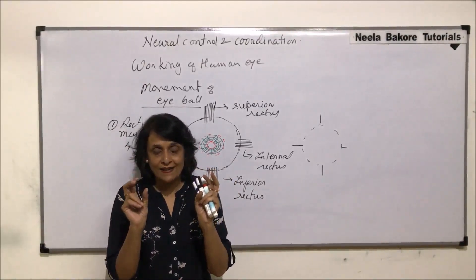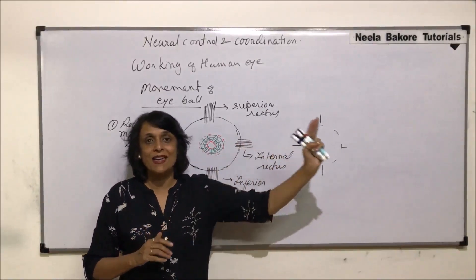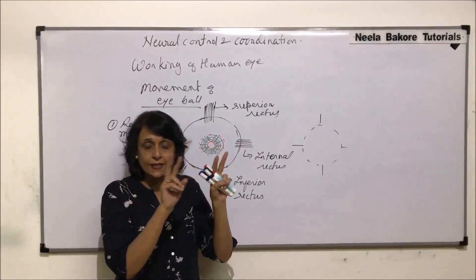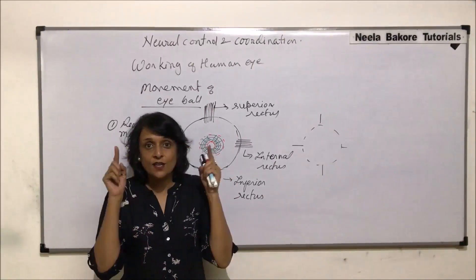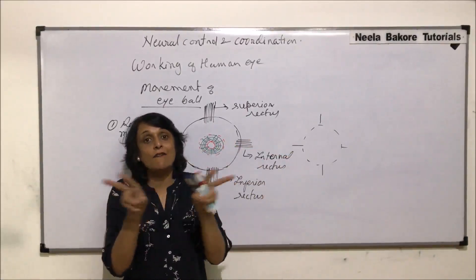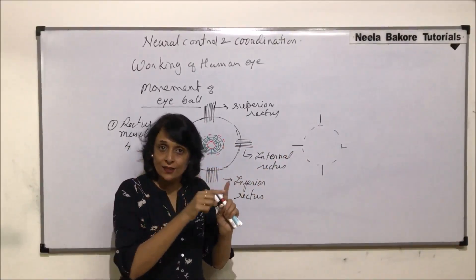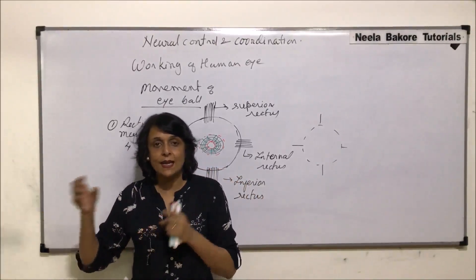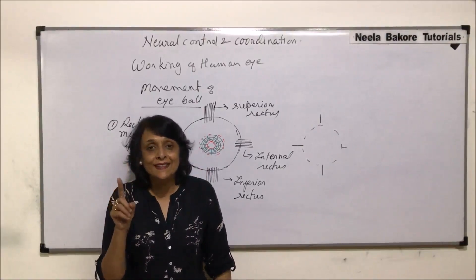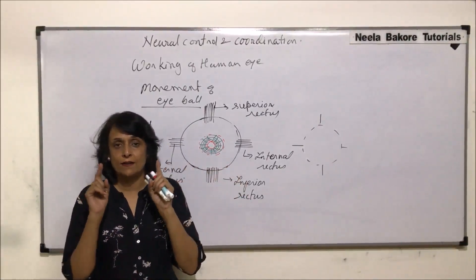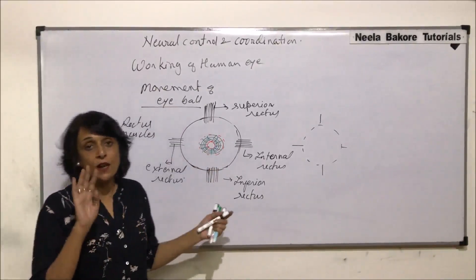When both eyes are looking at one object, we have binocular vision. If we look to the left, the external rectus of the left eye and the internal rectus of the right eye contract together. If we look to the right, it is the external rectus of the right eye and the internal rectus of the left eye. So internal and external rectus muscles help in the sideways movement, while superior and inferior help in up and down movement.